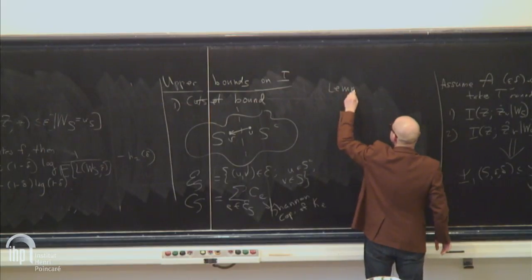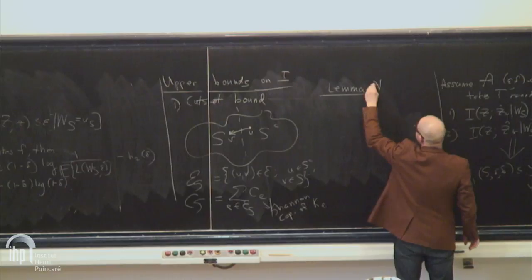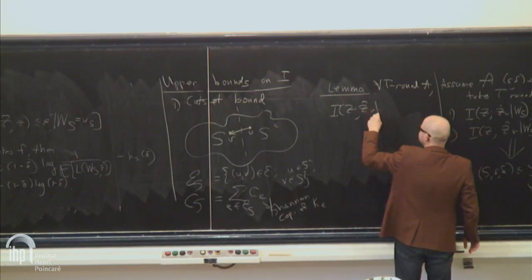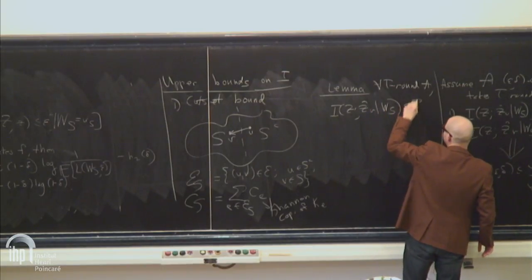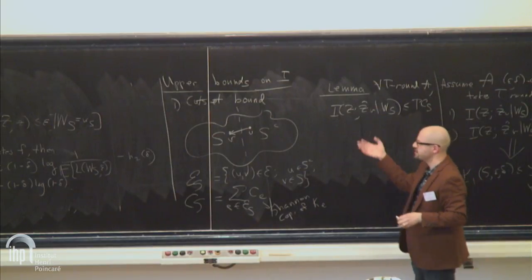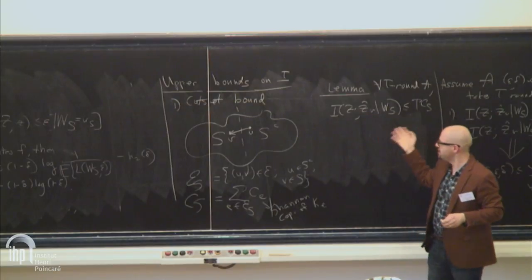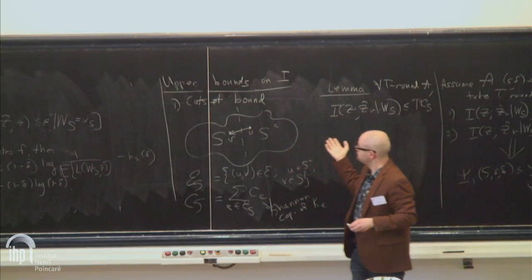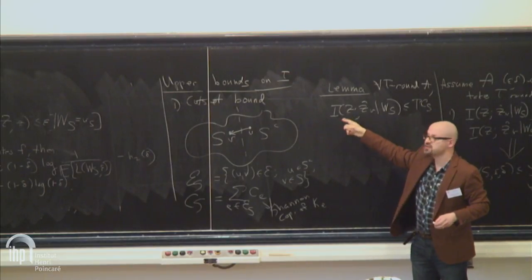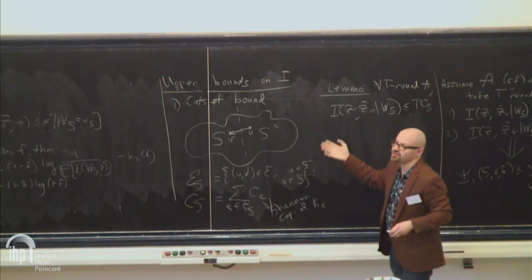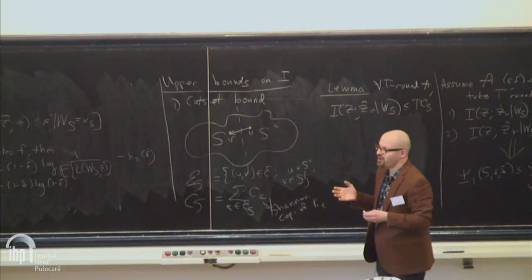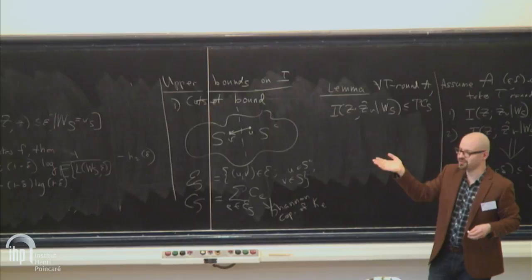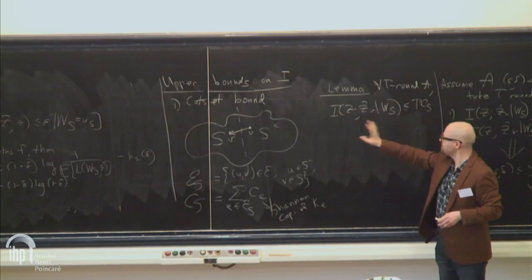Lemma 2: For any T-round algorithm A, the mutual information between Z and the estimate at node V is upper bounded by T · C_S. This is more or less standard. Our contribution is a proof that uses only properties of mutual information, avoiding differential entropy — because differential entropy is a nasty-behaving quantity, and if you use it you cannot assume the function all nodes want to compute is the same, since you might end up with infinite differential entropy. So our proof uses only mutual information properties.